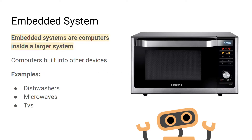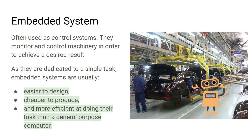An embedded system is defined as a computer within a larger system. An example of this would be a microwave — the small computer in the microwave is considered the embedded system, as it is dedicated to controlling the microwave and how it cooks your food. Embedded systems are usually used as control systems; they monitor and control machinery so that you can get your desired outcome.